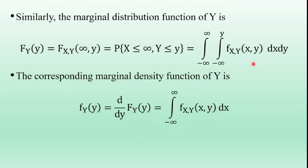The corresponding marginal density function of random variable Y is obtained by differentiating the cumulative distribution function of Y. So small f_Y of y equals d/dy of capital F_Y of y. Substituting the expression for capital F_Y of y and taking the derivative with respect to y — the integration with respect to y cancels — the remaining term is the integral from minus infinity to infinity of f_XY of (x, y) dx. This equation is called the marginal density function of random variable Y.